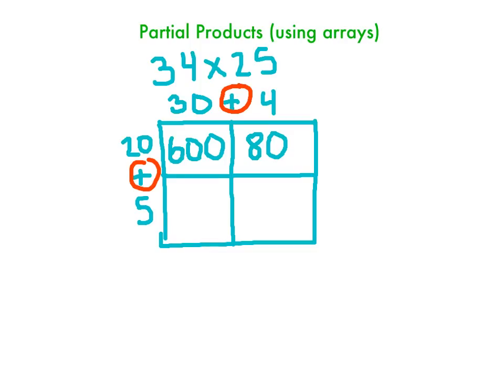Then I'm going to go down. I have a 5. I'm going to see that the 5 and 30 overlap. So 5 times 30 is going to be 150. And then my last box is going to be 5 times 4, which equals 20.